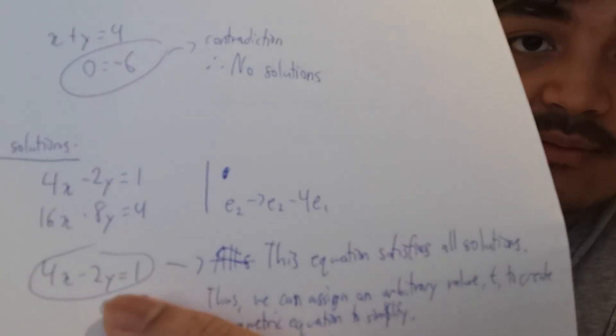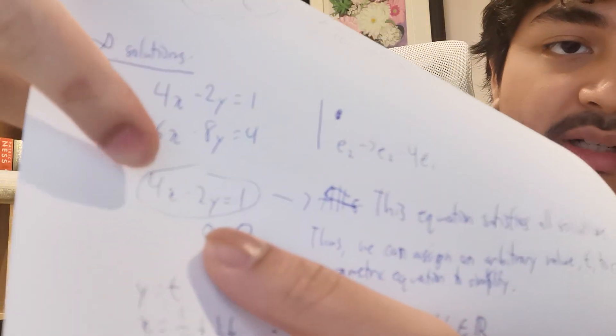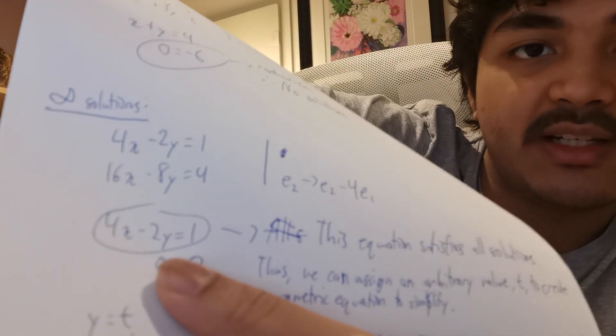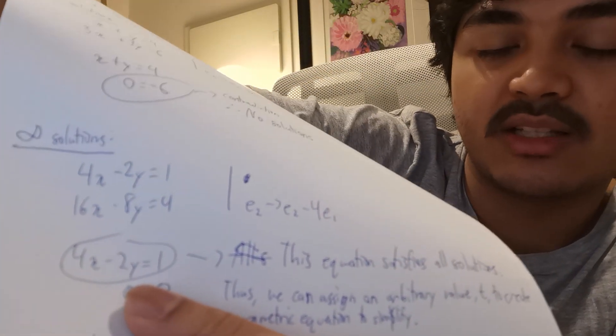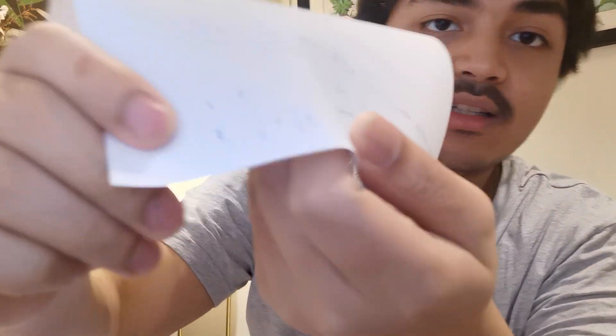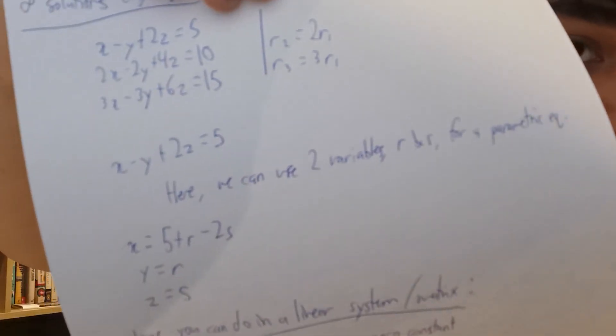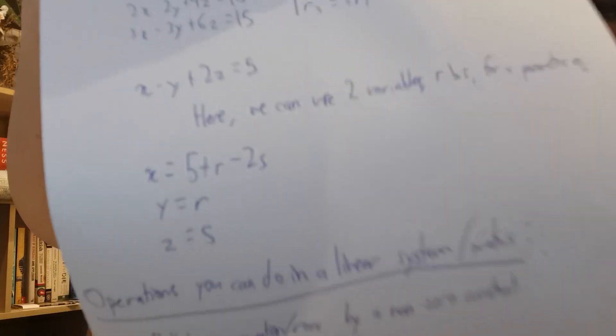If you're in the situation where you have infinite solutions, you'll be able to simplify it and realize everything sums up to one joint equation — you can't simplify it further to give each unknown a single constant. In that case, you can introduce a parameter like T, so y equals T and x equals some equation in T. If you have two unknowns free, use R and S — y equals R, z equals S, and x equals the equation with y and z substituted.